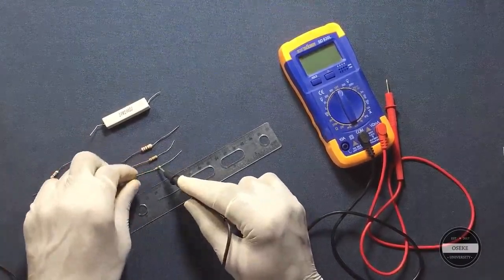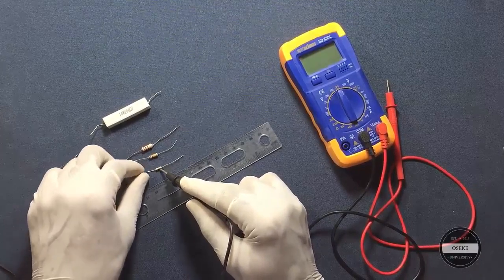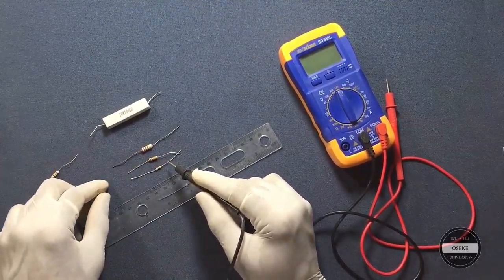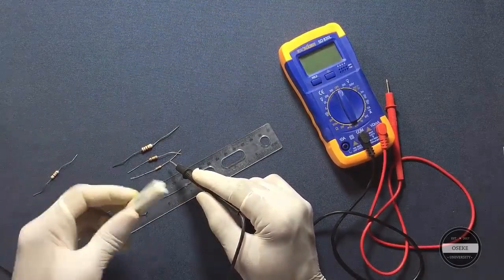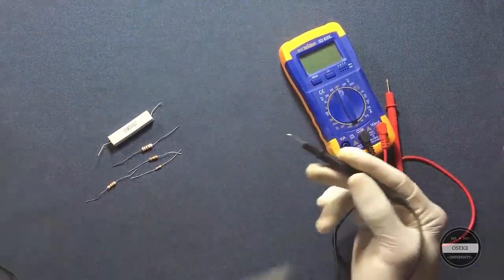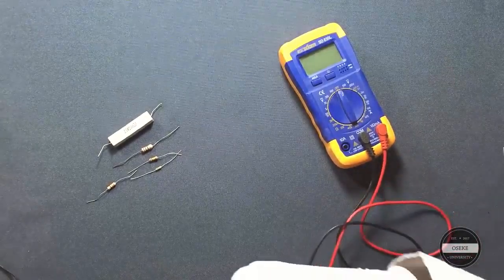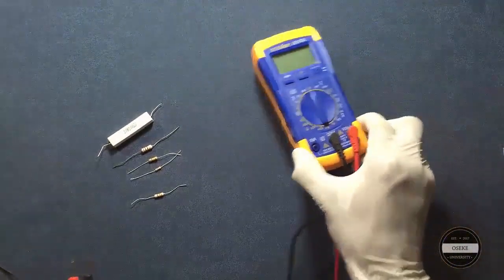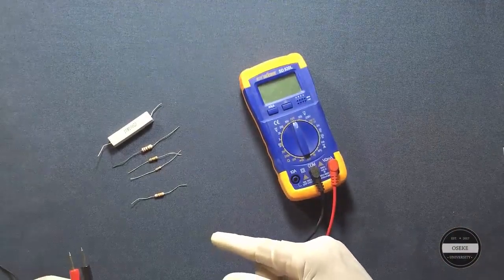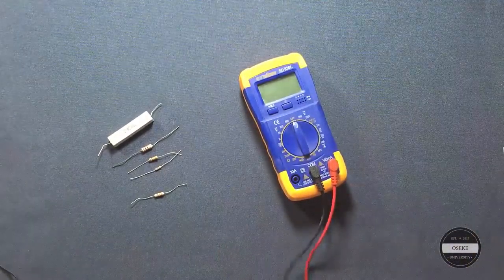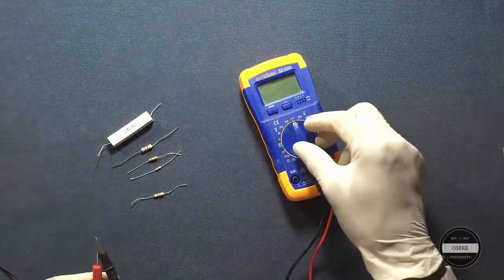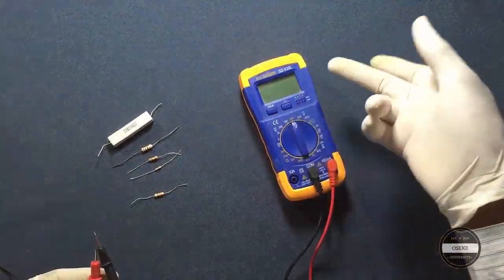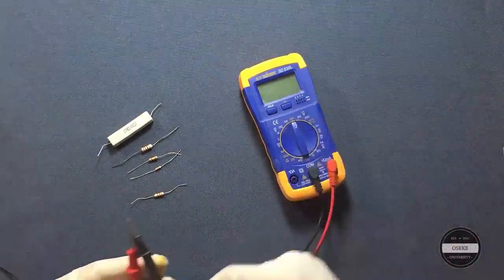So next step is we're going to be testing their values. We need to see the values, so we need to now check the value of these resistors. The first thing we need to do is to check the value of the resistors. You can use a digital multimeter and I recommend you use it. It's very easy.